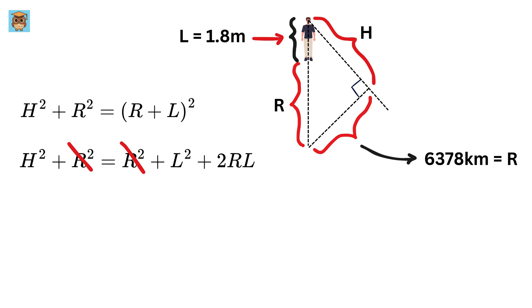R² gets cancelled out. And after taking L as common here, we are left with L times (2R + L).